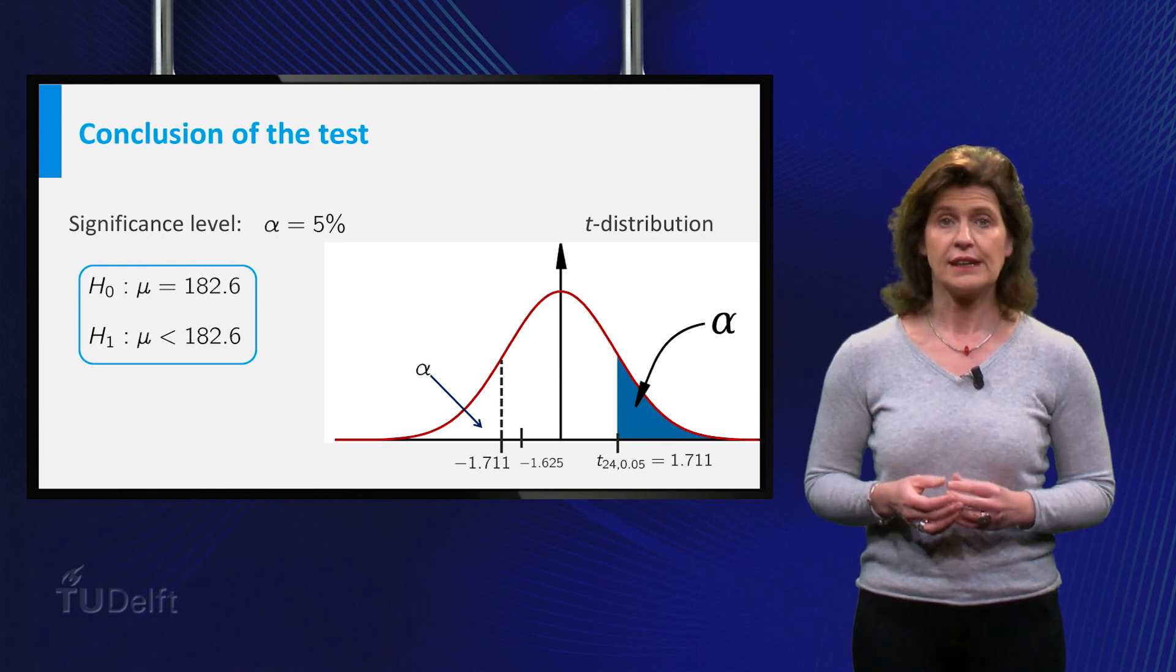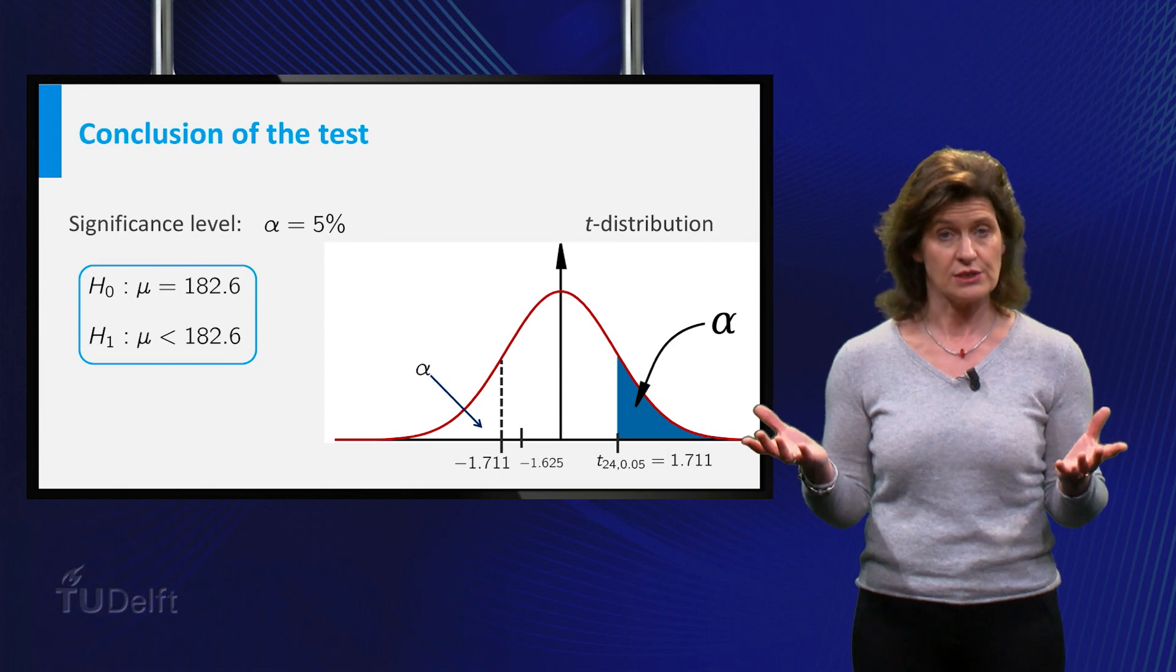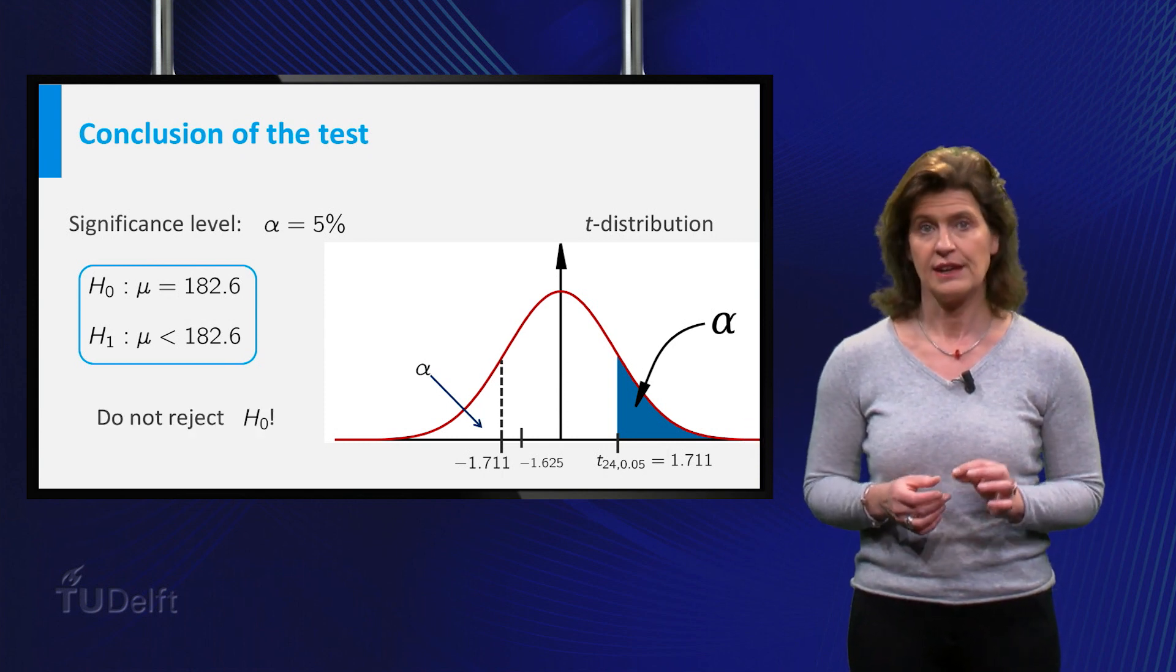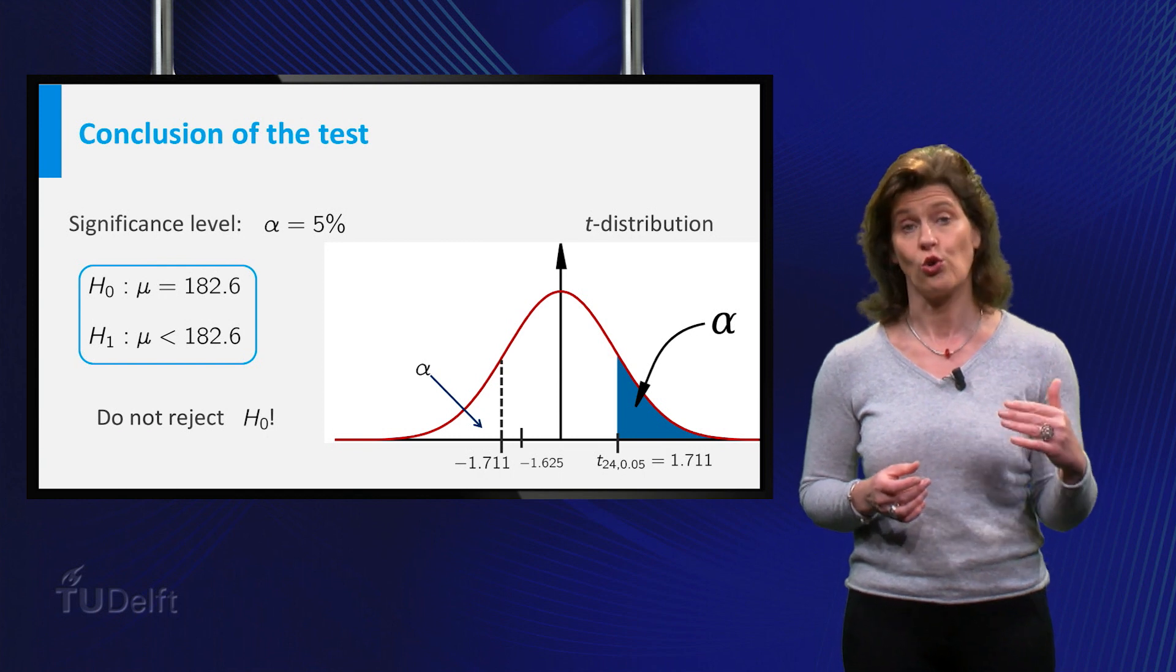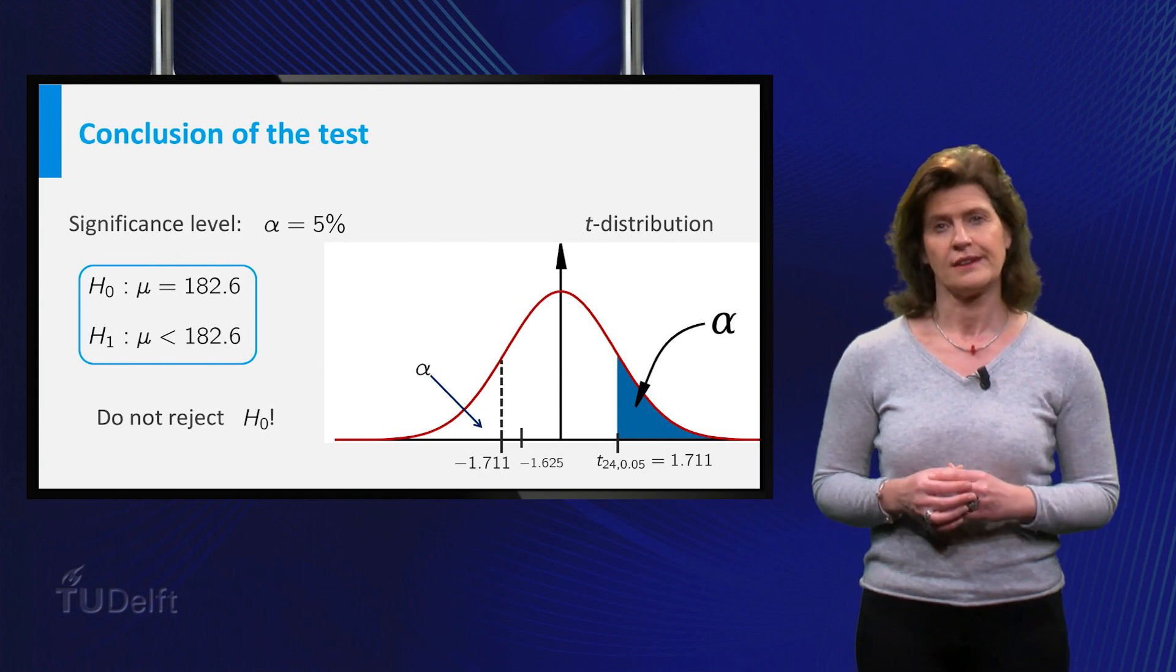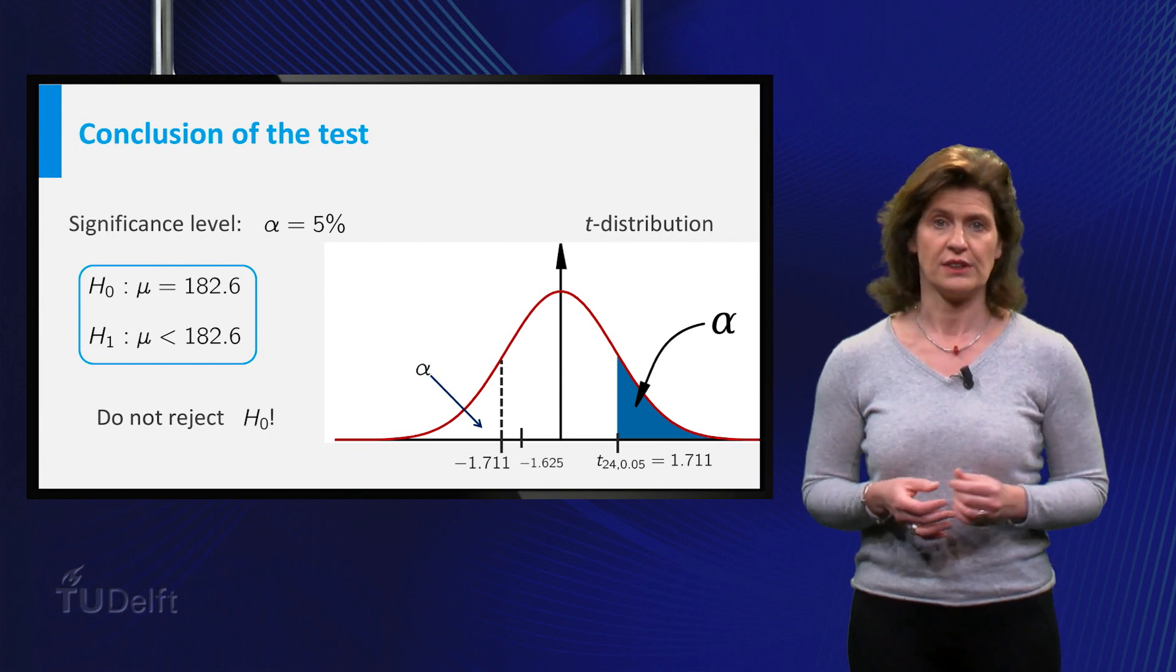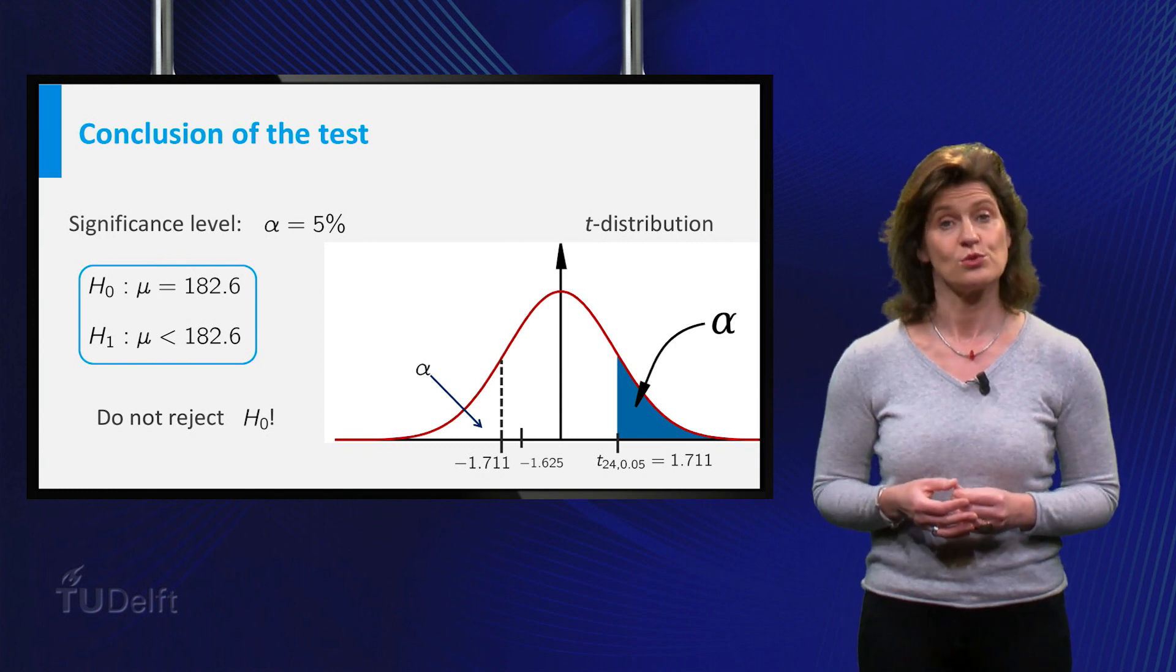And you see that it does not lie in the critical region. So you cannot reject the null hypothesis that Amsterdam students are as tall as their Dutch colleagues. This means that the data do not provide enough evidence to conclude that Amsterdam students are shorter.